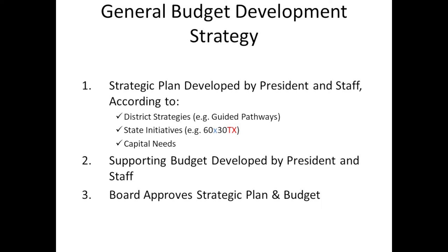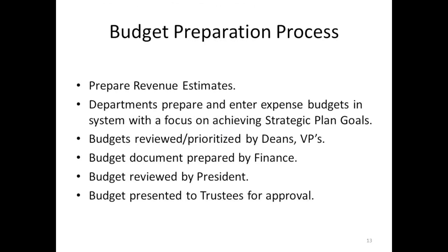The board approves the strategic plan and the budget. It starts with revenue — you've got to estimate your revenue before you can even head to expense. From that revenue estimate, you get the volume of what you expect on enrollment, which is key to understanding what you'll need for instruction and student services. So everything ties together. It all starts with revenue and then goes through some sort of approval process at the institution as they try to balance revenues and expense in a proposal that ultimately comes to the board.